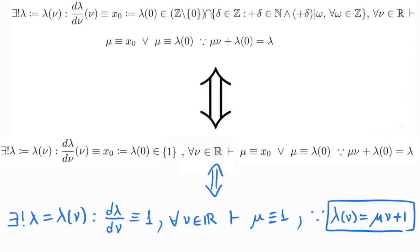This reads as, from the fact that there exists a unique lambda depending on nu, such that the derivative of lambda with respect to nu is 1 for every nu real, I conclude that mu is 1 since lambda of nu equals mu nu plus 1. Of course, this huge mathematical phrase can be simplified even more.